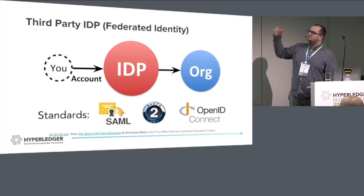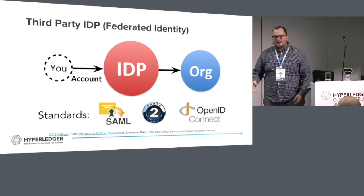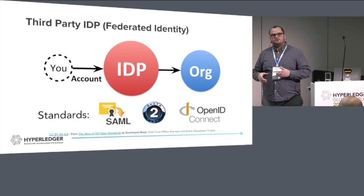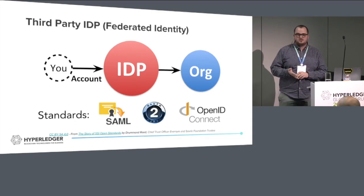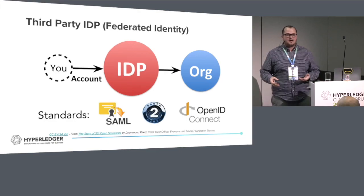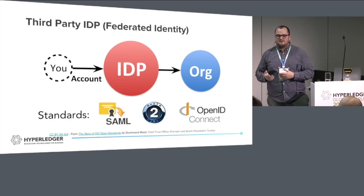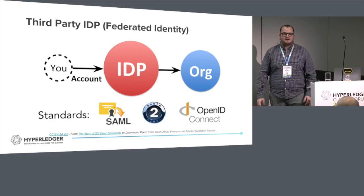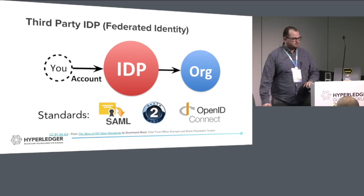These types of models also create large honeypots, which creates bad systems around the data. For example, Facebook and Google, which traditionally have had very secure systems, are still getting hacked and people are stealing hundreds of thousands of people's data, mining that data to commit identity theft, fraud, extortion, or many different scams.